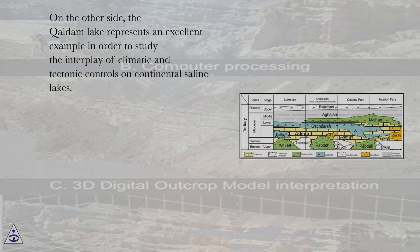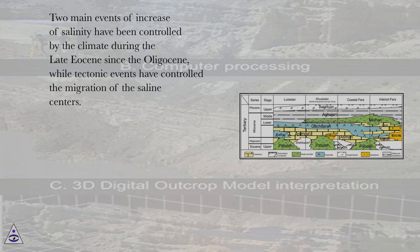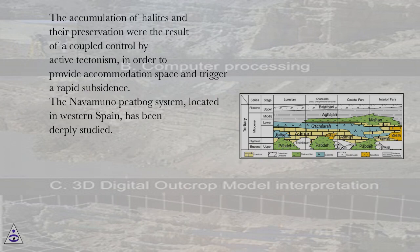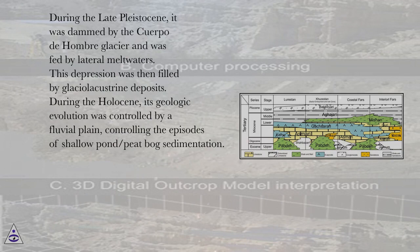Two main events of salinity increase were controlled by climate during the late Eocene through the Oligocene, while tectonic events controlled the migration of saline centers. The accumulation and preservation of halites resulted from a coupled control by active tectonism providing accommodation space and triggering rapid subsidence. The Navamuno peat bog system, located in western Spain, has been deeply studied. During the late Pleistocene, it was dammed by the Cuerpo de Hombre glacier and was fed by lateral meltwaters, filling the depression with glaciolacustrine deposits. During the Holocene, its geologic evolution was controlled by a fluvial plain, controlling episodes of shallow pond/peat bog sedimentation. An age model was constructed based on radiocarbon dating, allowing interpretation of environmental changes during the late glacial and post-glacial.